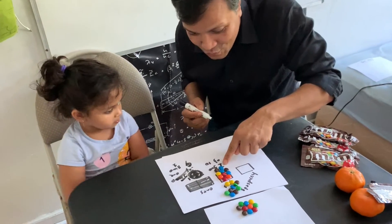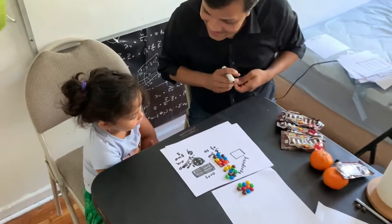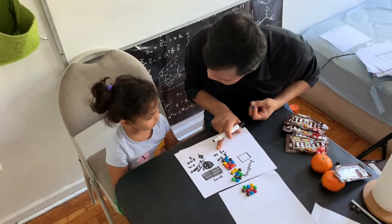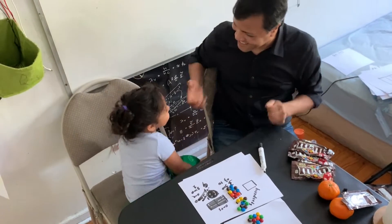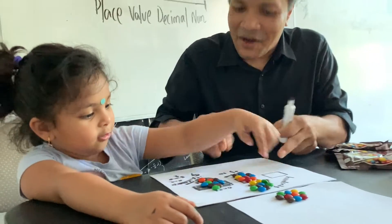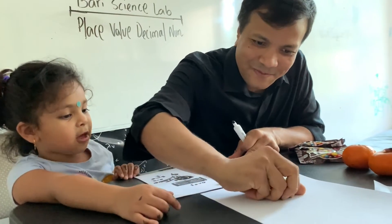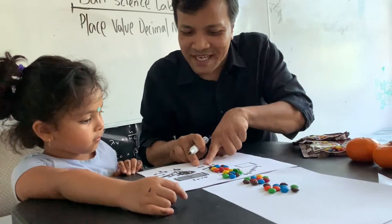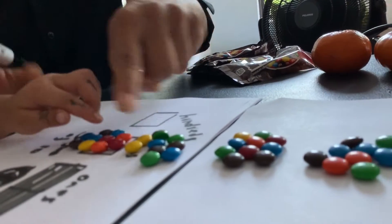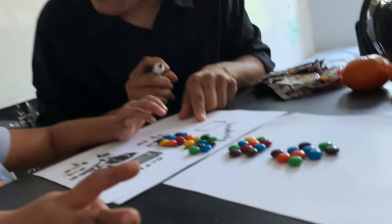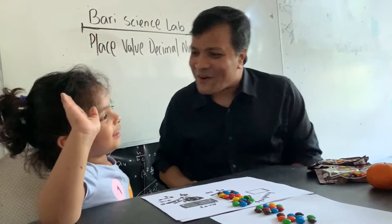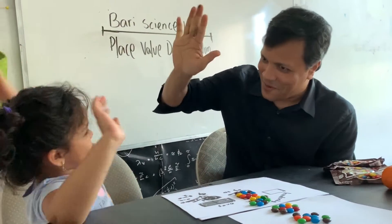So how many groups of 10 do we have? One, two, three — three groups of 10. How many candies you have? Ten — we have to put this one here. That's correct, because there are 10 candies. Now how many groups of 10 do we have? One, two, three, four — four groups of 10. That means it's 40. Give me high five!